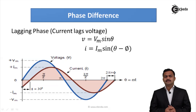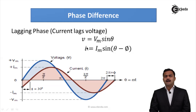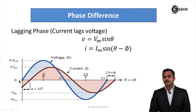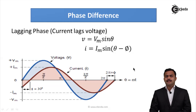Now consider a lagging phase. The reference is again V = Vm sine θ, starting from 0. The second quantity I is starting from a later point — it is not at 0, it starts late by angle φ. This angle φ is shown here. The current I starts late compared to the reference, so there is a phase difference of φ between them. Since the current starts late, it is a lagging phase. For a lagging phase, the waveform will start after 0, which is our reference.